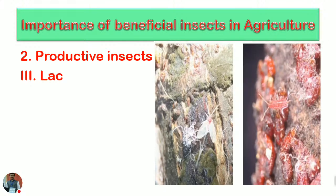Lac is produced by the lac insect, which is a homopteran. It has the capacity to release a resinous substance called lac, which is utilized in different places. In India, lac is the sole product produced in the highest quantity compared to the world. It is a very good and revolutionary product with a very big historical background.